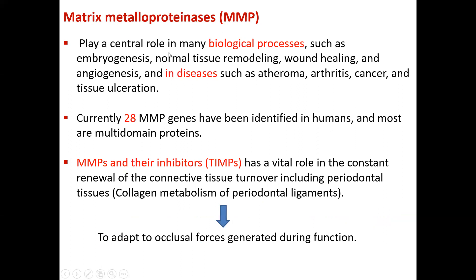One of the most important types of proteinases is called matrix metalloproteinases — the MMPs. Matrix metalloproteinases have a central role in different biological processes — for example in embryogenesis, normal tissue remodeling, which is very important for the periodontal ligament fiber normal function as a cushion against occlusal force, also in wound healing after different kinds of periodontal treatments whether surgical or non-surgical, angiogenesis, and all of the processes involved in healing or even within the inflammatory alterations where micro and macro changes happen in the capillaries and arteries within the periodontal ligament and bone.